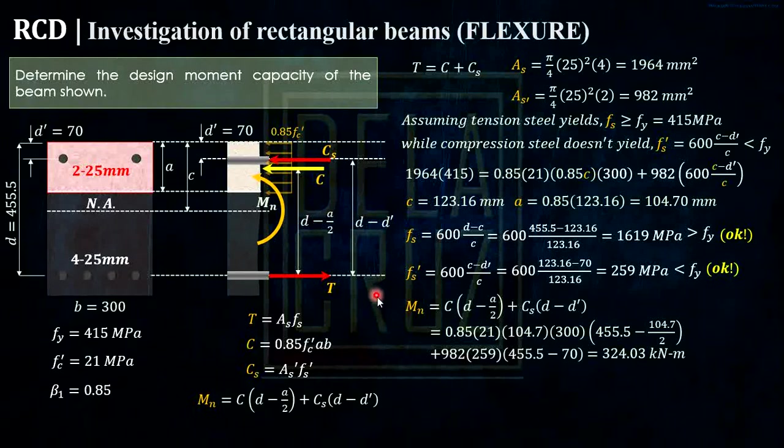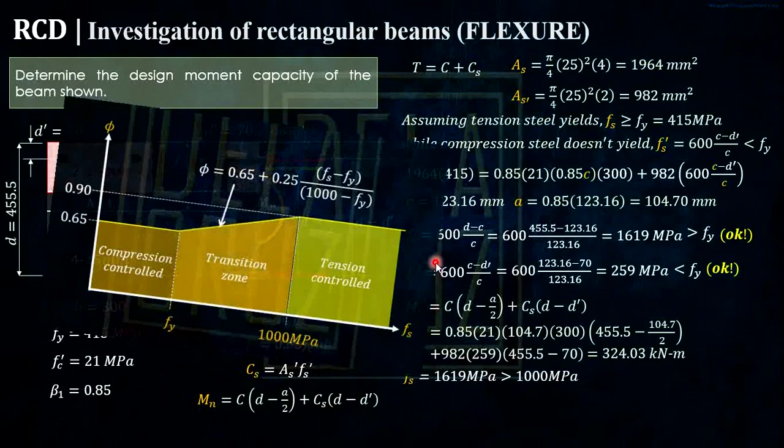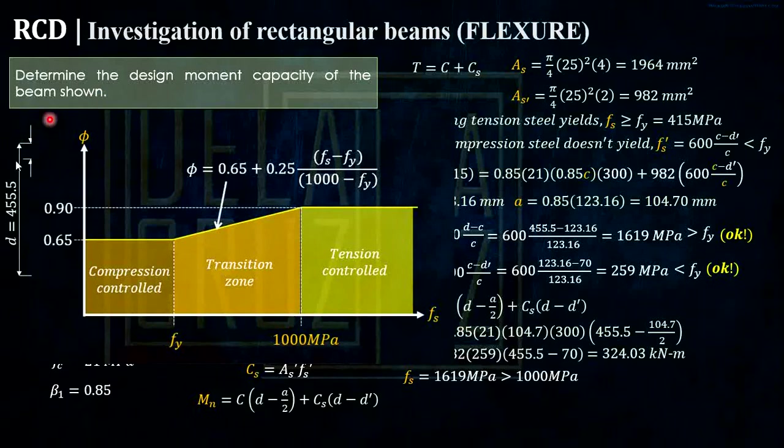Now, the question here is the design moment, that is the phi Mn. Now, this case happens. Our actual stress on tension is greater than 1,000 MPa. So ano yung reduction factor na gagamitin natin? Let's open the code again. So I showed this from my previous video. So please watch from the link here.